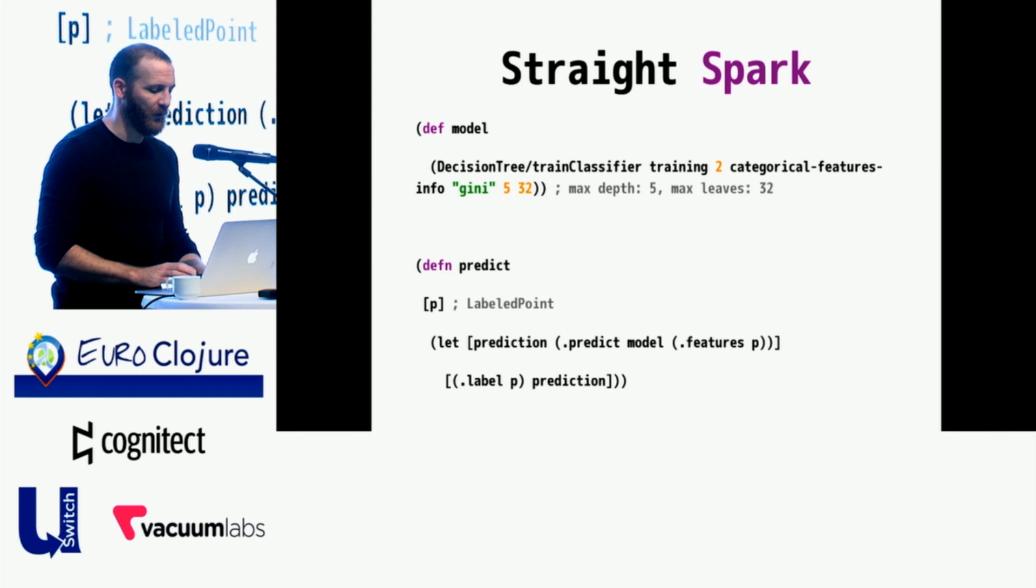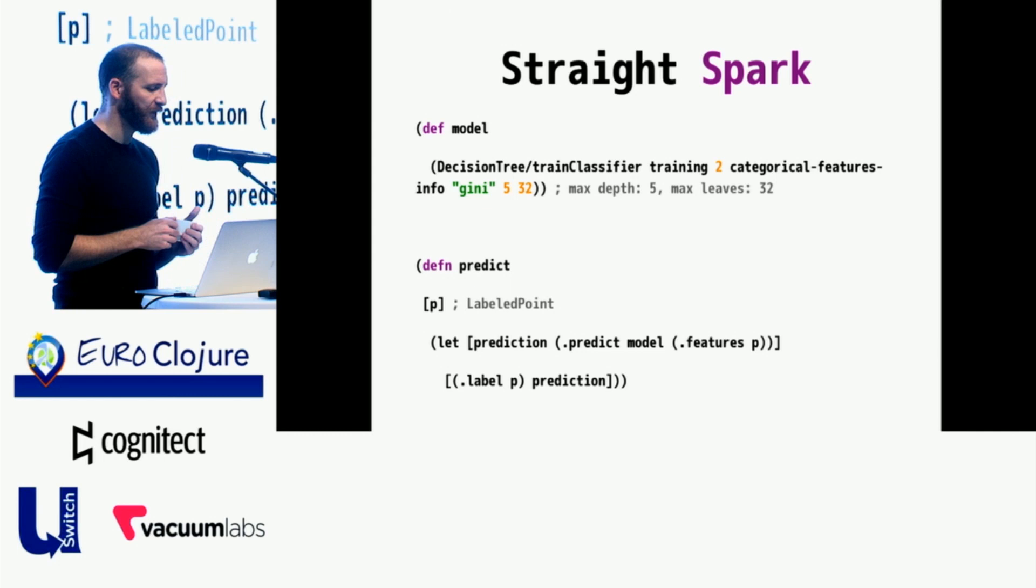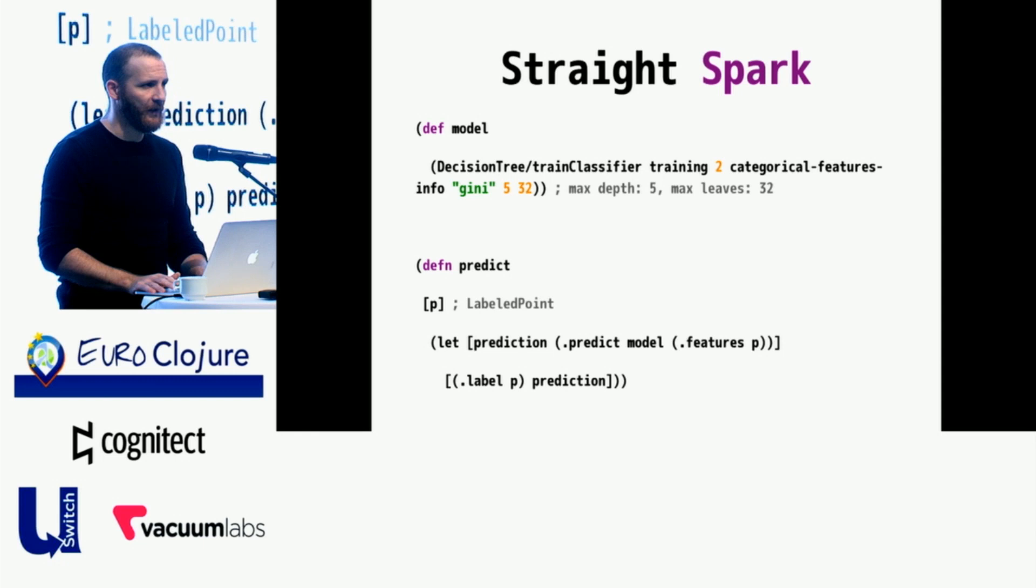So we've defined a model which uses the Apache Spark decision tree train classifier method. We have a training set that I have pre-split and set up off screen. Two is a description of the label arity, that it's either yes or no in terms of post-stop activity. Categorical features info is a map that explains to Spark: you're going to get in this column, the first one that describes sex, one of two possible values. For race, six possible values. For stop type, two possible values. Gini is just one of a couple different methods for handling information gain. Here we've set a max depth of five on the tree and limited the leaves to 32. Limiting the size of the tree is a form of pruning, which is necessary to avoid overfitting. I haven't really gotten a chance to tune these much, and it's very possible that playing around with them would yield better results.